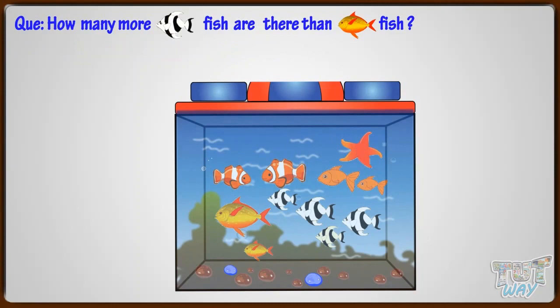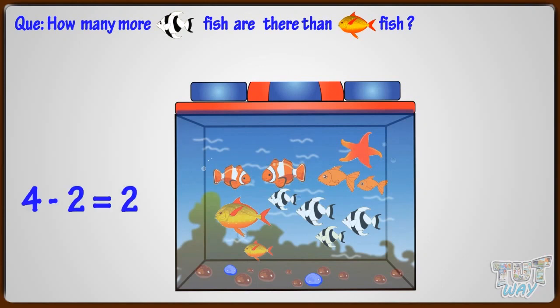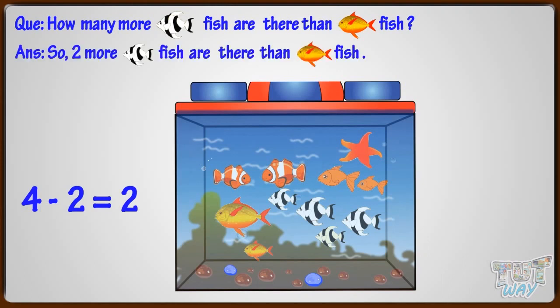How many more black and white fish are there than yellow fish? Let's find it out. There are four black and white fish and two yellow fish. Four minus two equals two. So two more black and white fish are there than yellow fish.